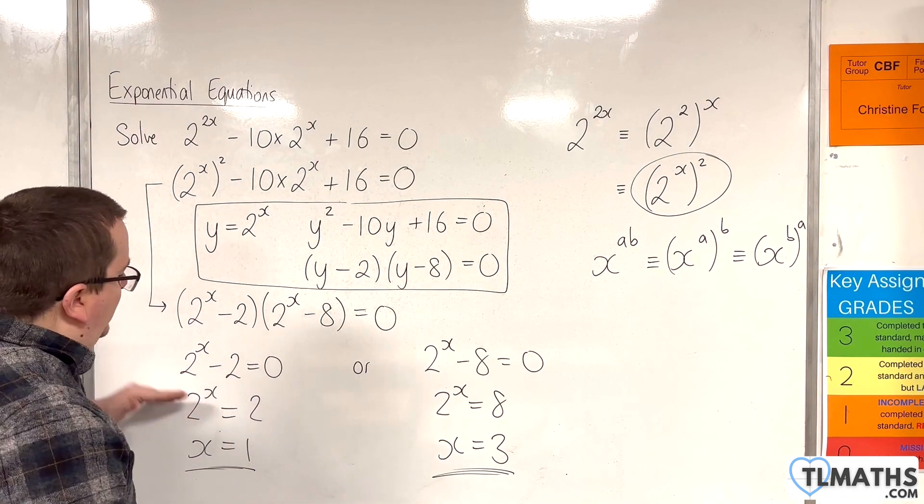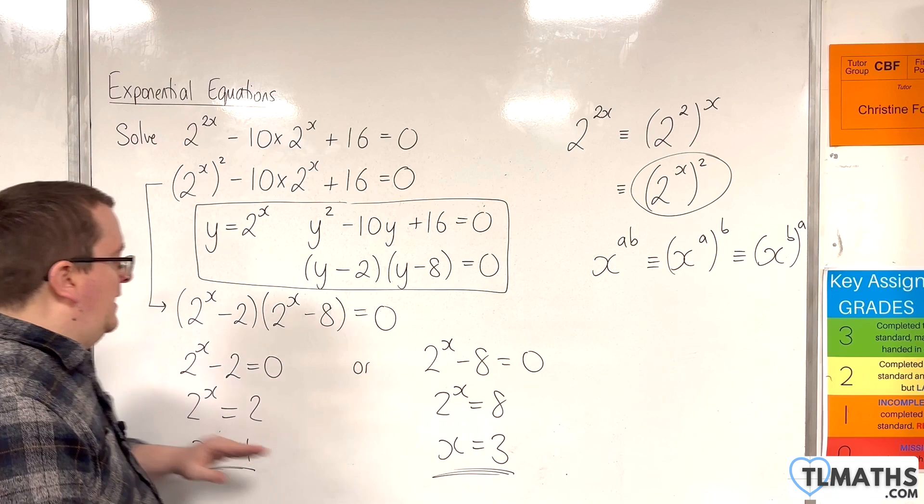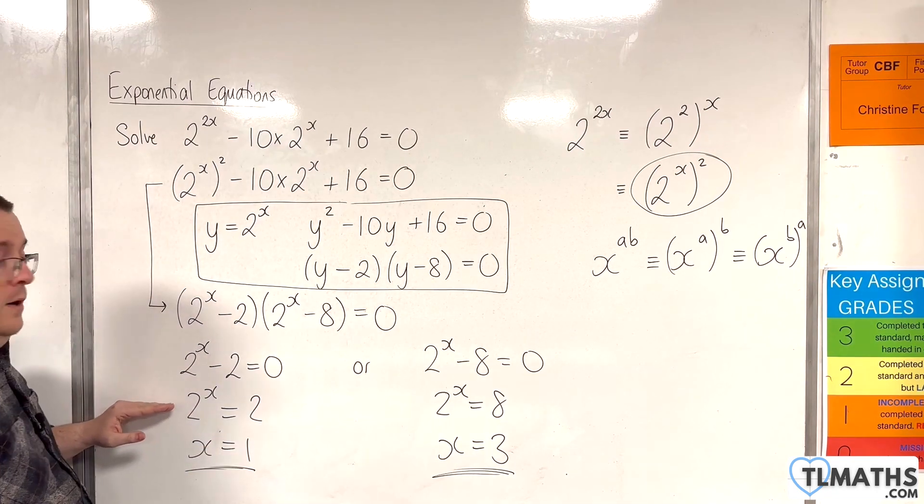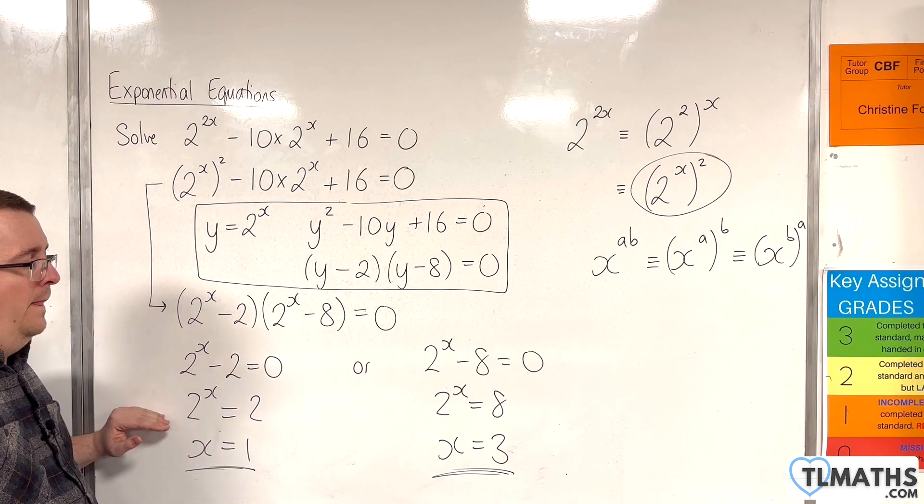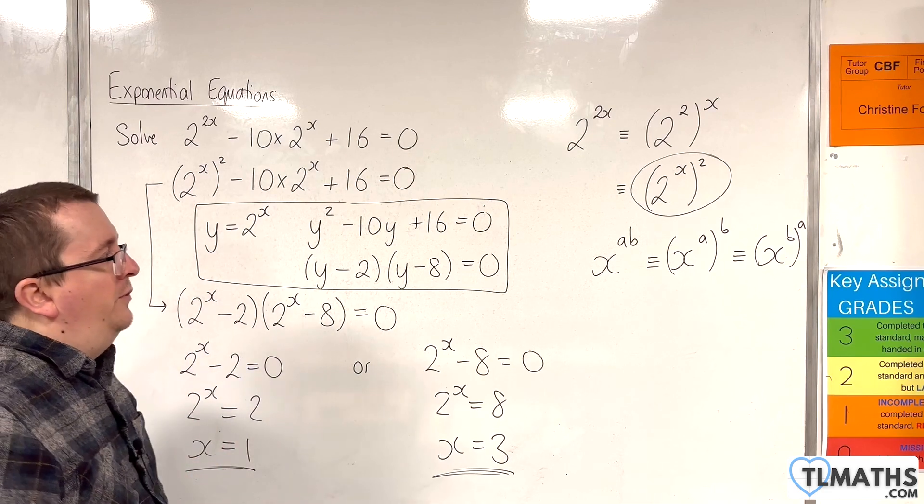Now, you can see that when you get down to this line, if we'd had 2 to the x equals 5, I would have to use logarithms in order to solve it. That's where logarithms can come in.